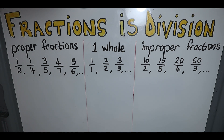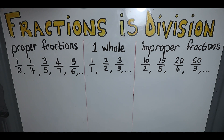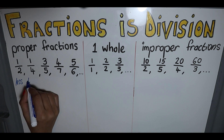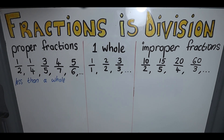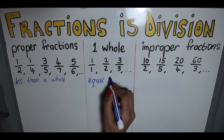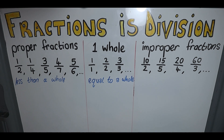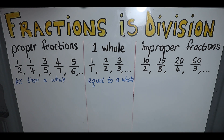There are three different types of fractions: a proper fraction, a whole fraction, and an improper fraction. With proper fractions your answer will be less than a whole. With a whole fraction your answer will be equal to a whole. And with improper fractions your answer will be more than a whole.